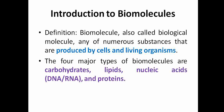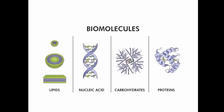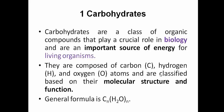There are four major types of biomolecules: carbohydrates, lipids, nucleic acids, and proteins. Lipids have distinct layered structures — the lipid bilayer with hydrophobic and hydrophilic regions. Nucleic acids include DNA, which is double-stranded, and RNA, which is single-stranded. Carbohydrates contain carbon, hydrogen, and oxygen, and proteins are chains of amino acids.